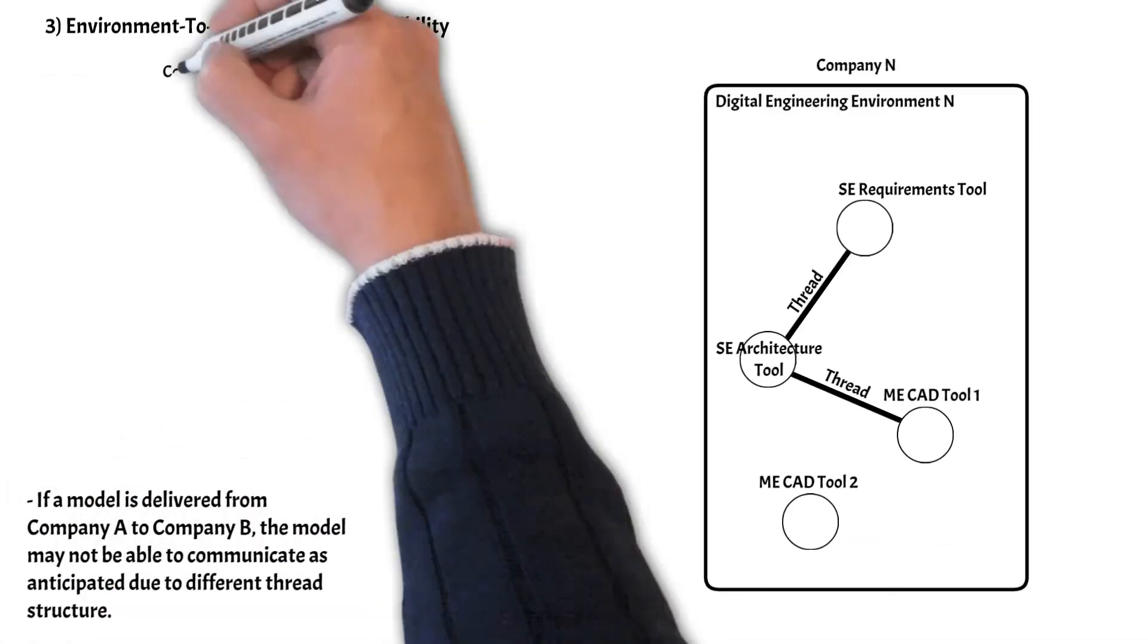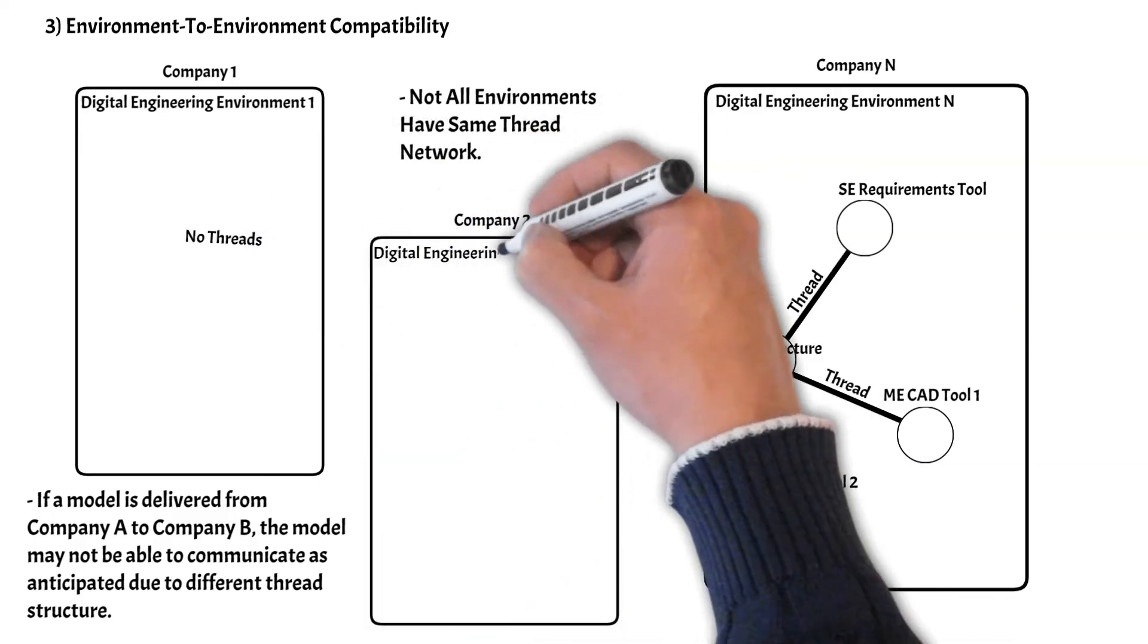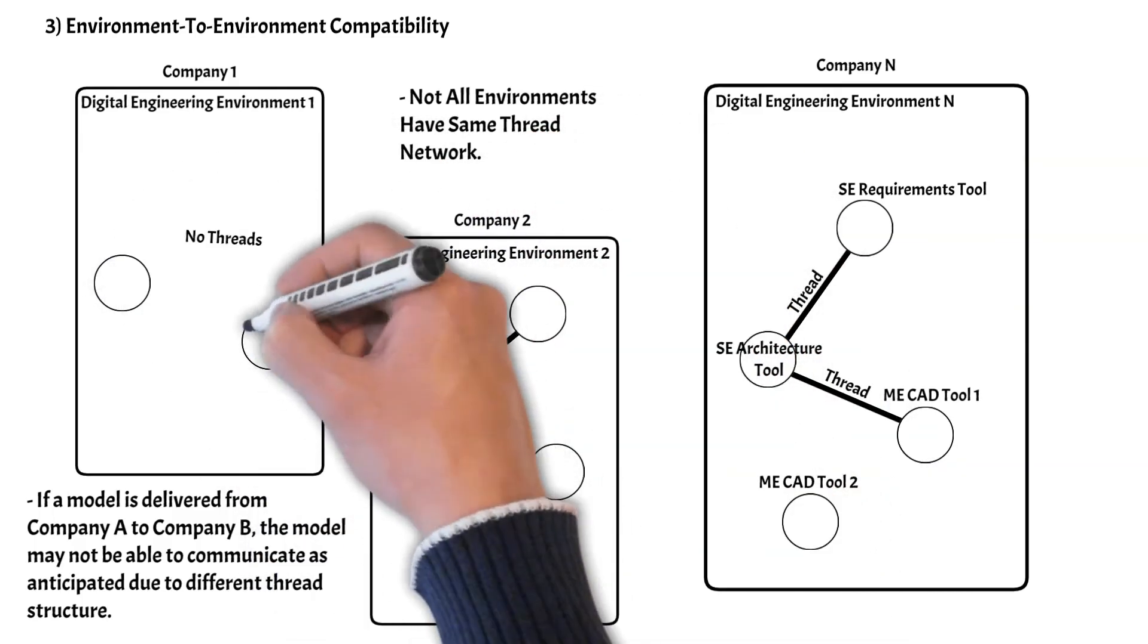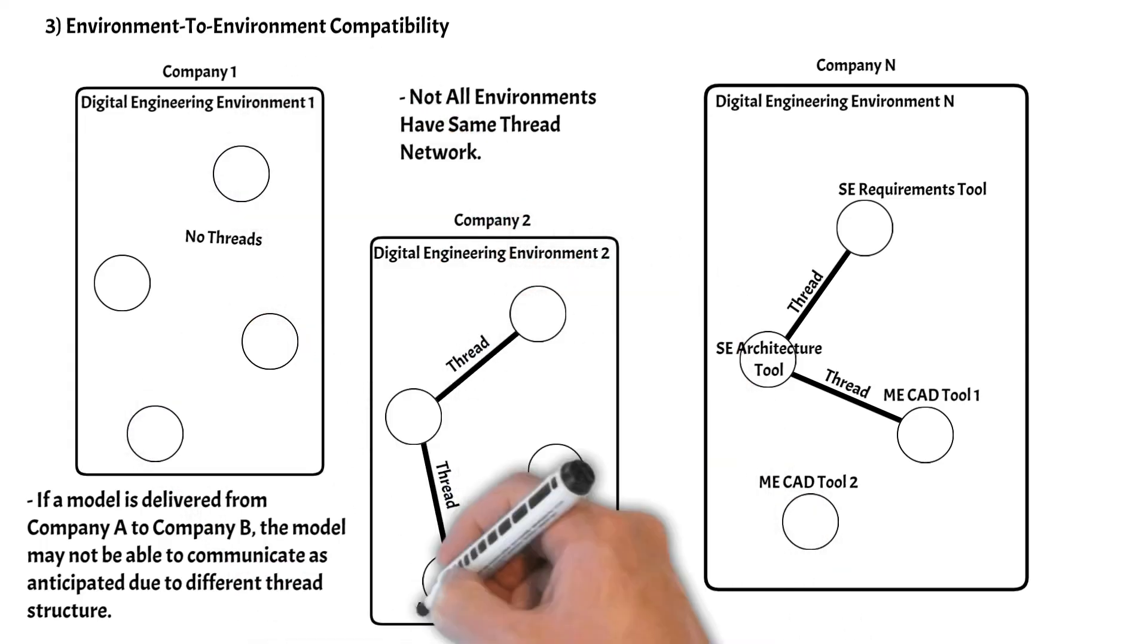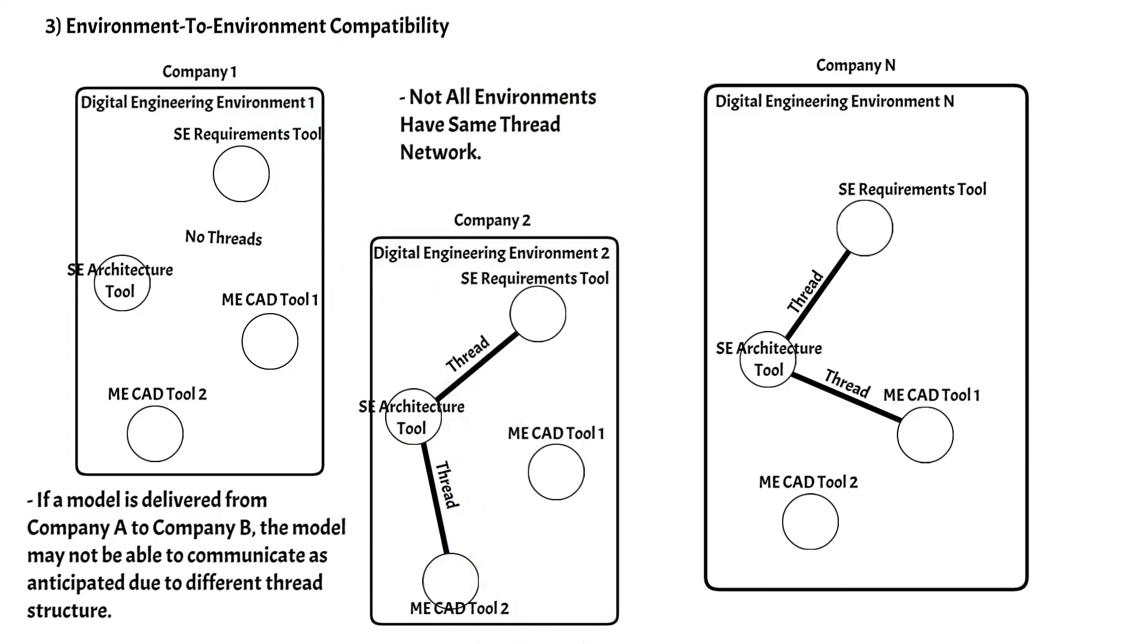Third and largest in scope is environment-to-environment compatibility. Each company will typically have their own environment. For example, when delivering models from subcontractor to prime contractor, both environments need to be reviewed. If the environments are not set up in the same manner, there will likely be compatibility errors.